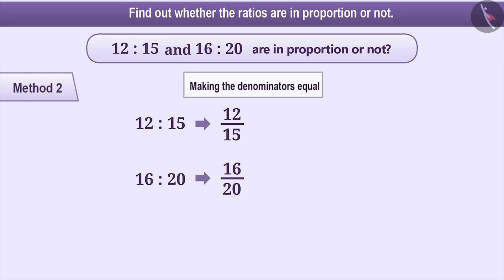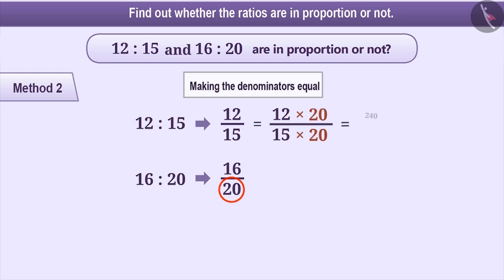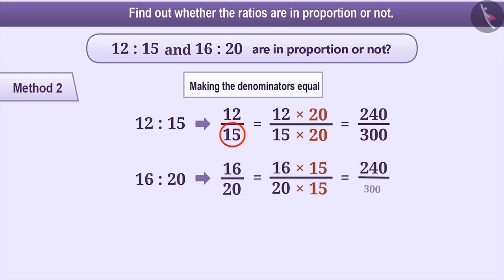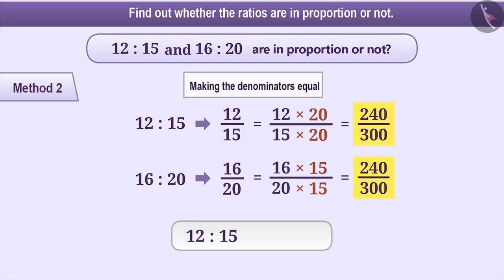To find out whether these two ratios are in proportion, we make their denominators equal. To do so, we multiply the numerator and denominator of one fraction with the denominator of the other fraction. For instance, if we multiply the numerator and denominator of 12 by 15 by 20, we get 240 by 300. Similarly, if we multiply 16 by 20 by 15, we get 240 by 300. Since the fractions are equal in both cases, we can say that 12 is to 15 is equal to 16 is to 20.